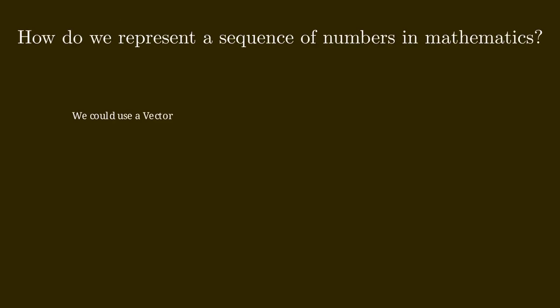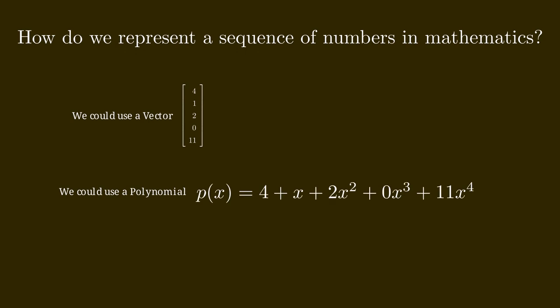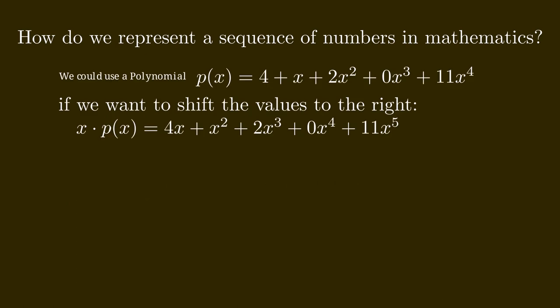How can we even represent a sequence of numbers in mathematics? One option would be to use a vector. Another option would be to use a polynomial. A polynomial has a series of terms 1, x, x², x³, and so on, and each of these terms has a number associated with it. We could use this number to represent the number in our sequence. So the vector and the polynomial would both represent the same sequence of five numbers: 4, 1, 2, 0, 11.